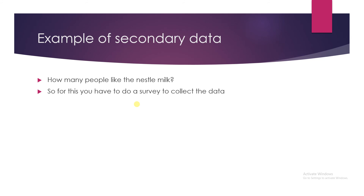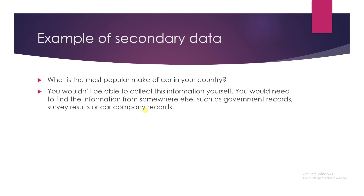Let's take an example of secondary data. Secondary data is information you need to collect from someone else. For example: how many people like Nestlé milk? You have no idea how many people like Nestlé milk, so for this purpose you have to do a survey. When you do a survey you can collect the information about it. So this is secondary data.